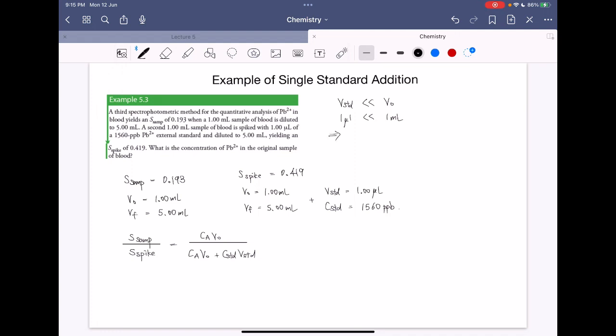So why is this important? This allows us to assume that the CA is the same in two samples. Without this assumption, we cannot use this equation. So this is super important.